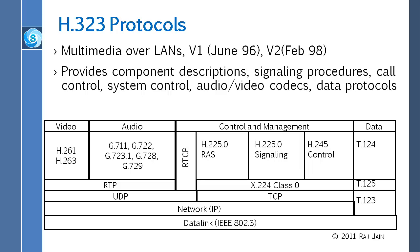If you have an H.323 device and the other side is also H.323, you negotiate common protocols for audio, video, control, and data. Each side may implement only a subset. There is a required subset — for example, everyone must implement G.711. Then you try to negotiate something better, like G.729 or G.723.1, which has a lower bit rate but the same quality. H.323 allows both sides to negotiate the appropriate option that both implement.